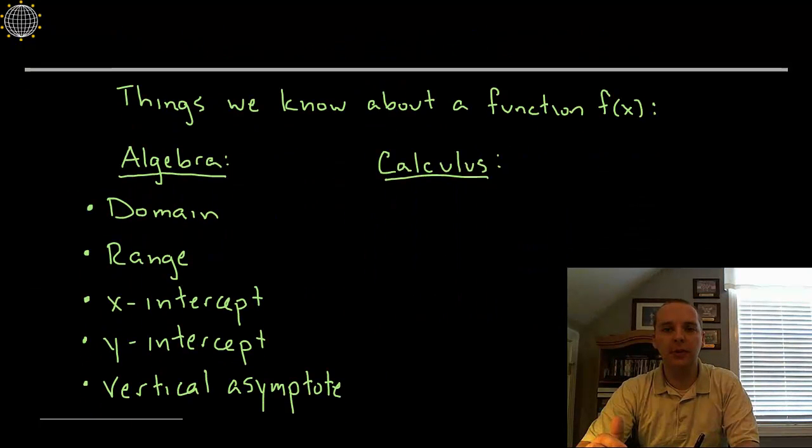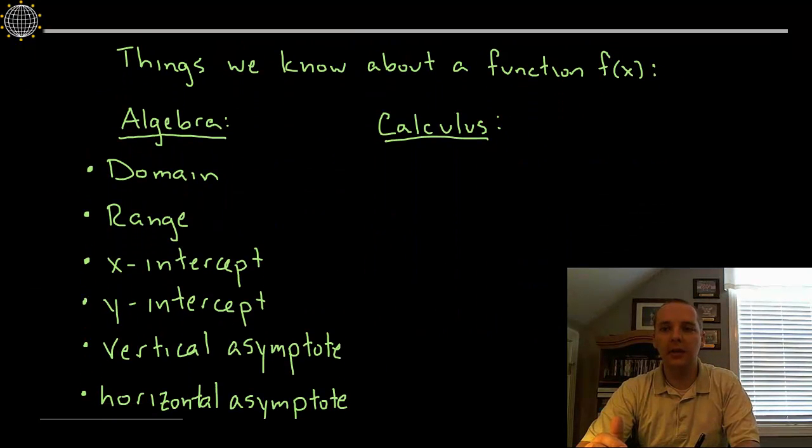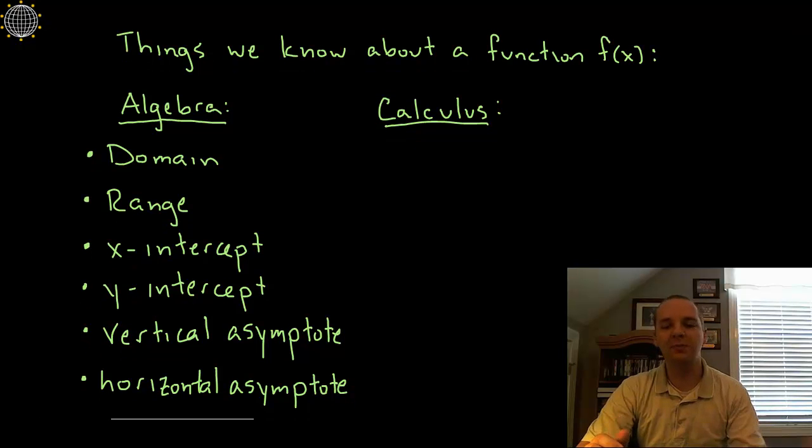So let's make us up a list of these things that we know. This is not an exhaustive list, just kind of a good starting list for the algebra concepts. If we're handed a function, we could find its domain and range. We learned about that a long time ago. We can find the x and y intercepts and we can find the asymptotes, the vertical and horizontal asymptotes.